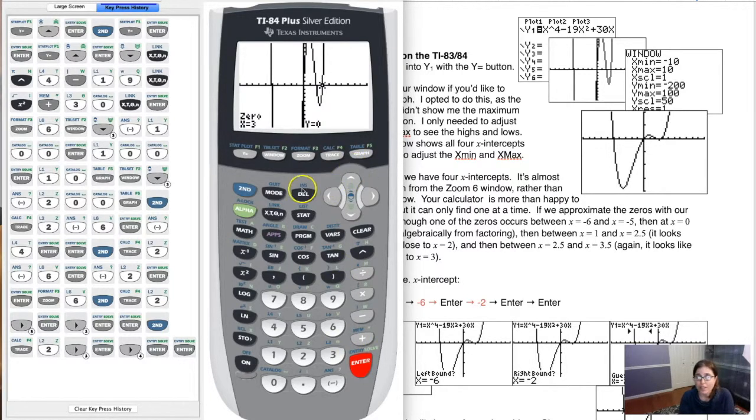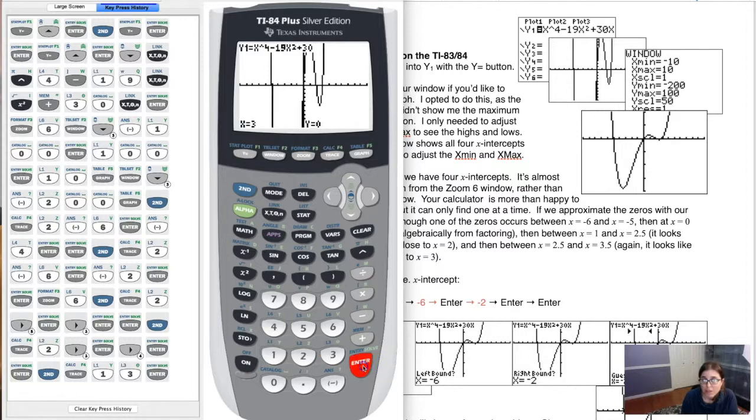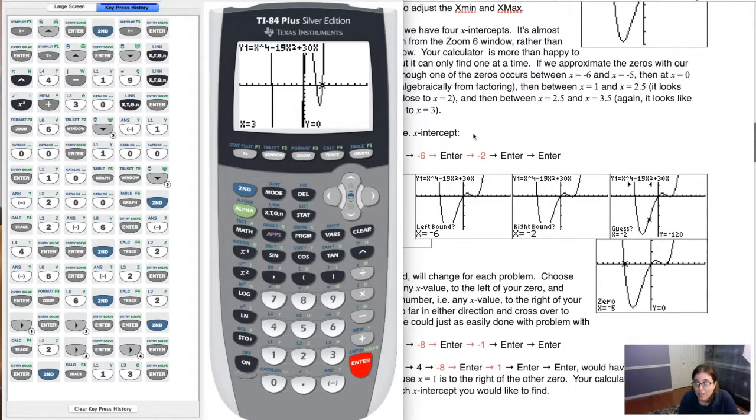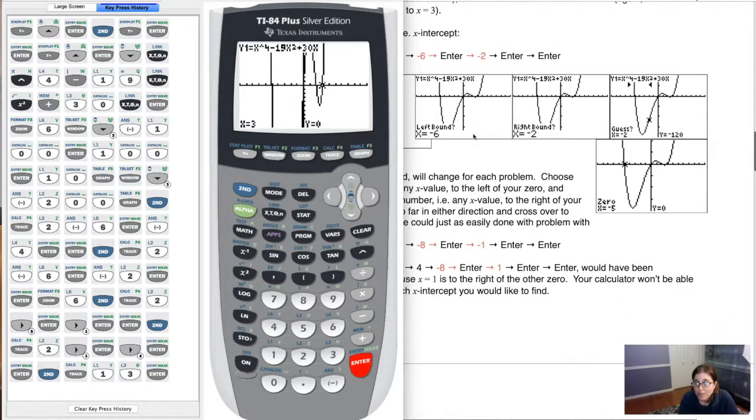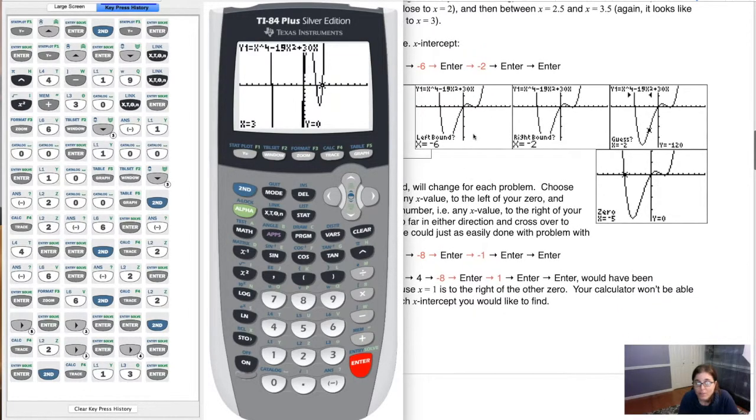And the last thing you could do, if you really thought it hit at a whole number, you can also just calculate the value there. I could hit second trace and option one, and let me plug in x equaling three, and my calculator says sure enough, you have an x-intercept, because y is zero. So we've got all of those options in there for you, and I wrote that all up here. So if you ever want to take a look at what your calculator's doing, or your calculator commands, I've always got them written up for you. Alright, so with that we're gonna head on back to example three.